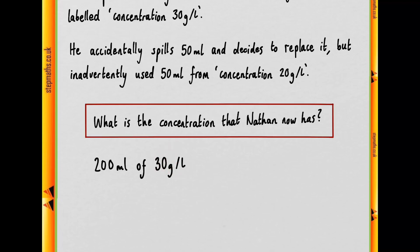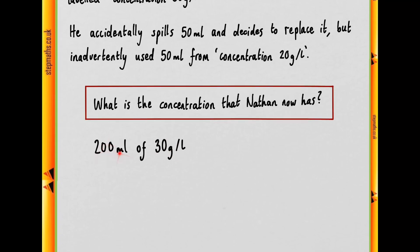Now how many grams of the solute will we have? So 200 ml are a fifth of a litre, so we do a fifth of 30 grams. So 30 over 5 is 6 grams in our 200 millilitre in the beaker.